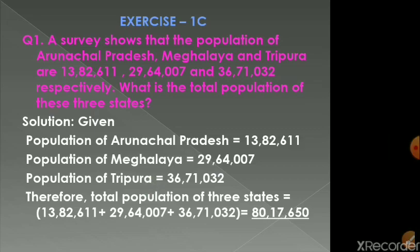The first question is: a survey shows that the population of Arunachal Pradesh, Meghalaya, and Tripura are 13,82,611, 29,64,007, and 36,71,032 respectively. What is the total population of these 3 states?